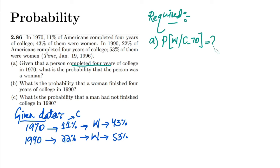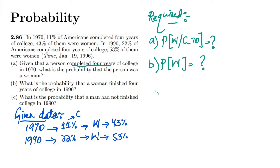In part B, we have to find the probability that a woman finished four years of college in 1990. In 1990, 22 percent of Americans completed four years of college and 53 percent of them were women. In part C, we have to find the probability that a man had not finished college in 1990.